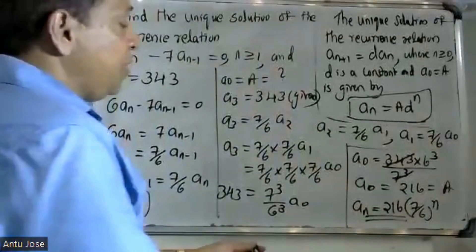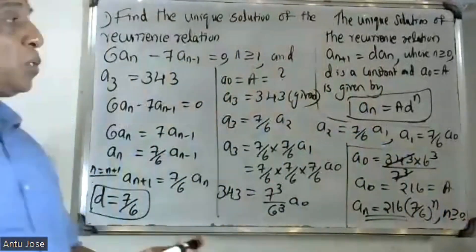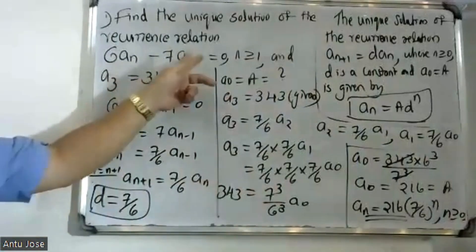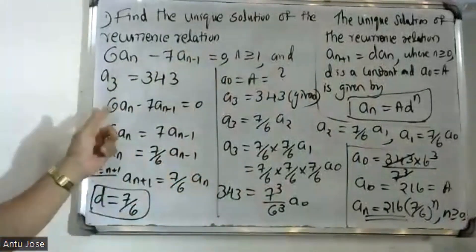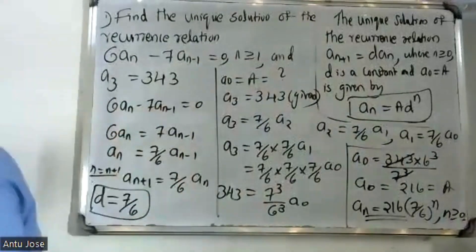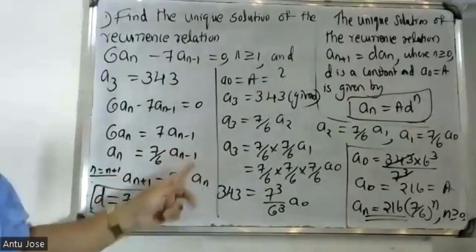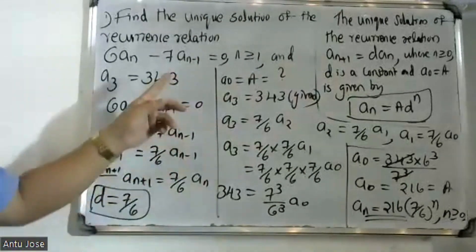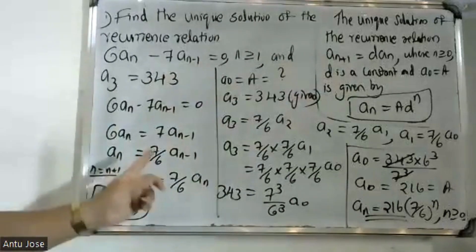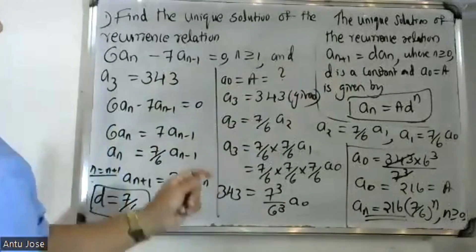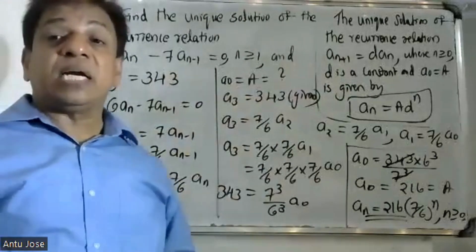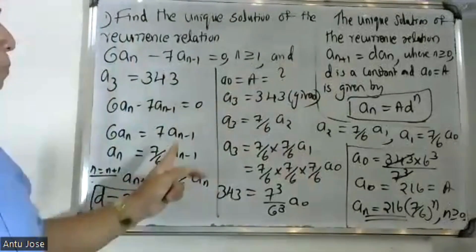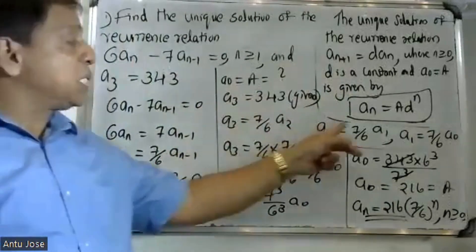We have a0 equal to 6 cube. Verifying: 6a minus 7a minus 1 equals 0, so 6a equals 7a minus 1, and the solution is a plus 1. So 1 plus 1 equals 7a, and comparing, d value is 7a minus 1 and 1 plus 2a minus 1 equals 0.